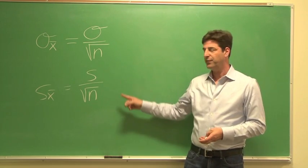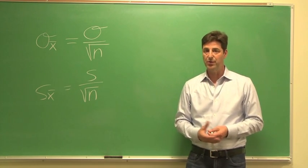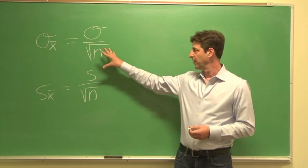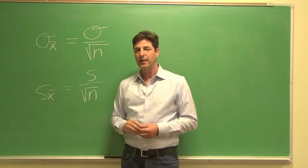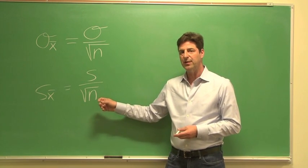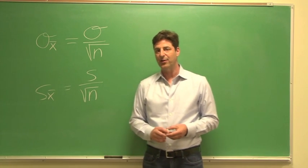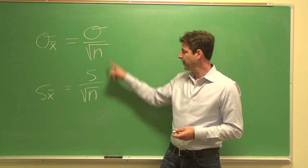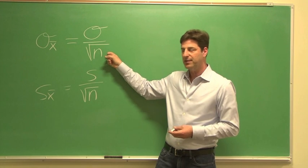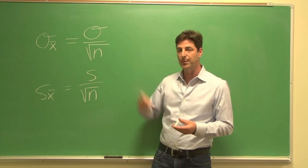There are two formulas for calculating the standard error of the mean that are really similar. The only difference is whether you know the population standard deviation or not. If you know the population standard deviation, you use it in the formula — this is the symbol for the standard error of the mean using the population standard deviation. If you don't know the population standard deviation, you use the sample standard deviation. The formulas are both really similar: it's the standard deviation divided by the square root of the sample size — it's just a matter of whether you're using the sample estimate of the standard deviation or the actual population standard deviation.